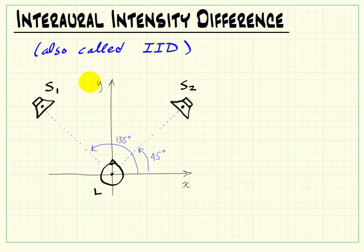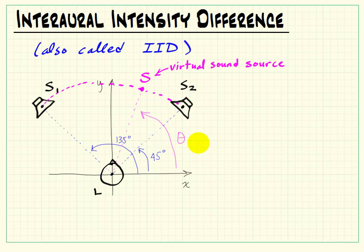The position then of our virtual sound source ought to appear somewhere anywhere between S1 and S2, say a virtual sound source that we perceive at position S. Now we can accomplish this by ultimately being able to specify some arbitrary angle theta between 45 degrees and 135 degrees.